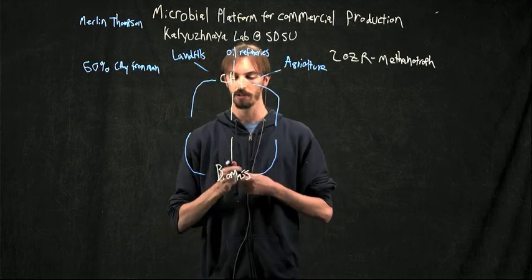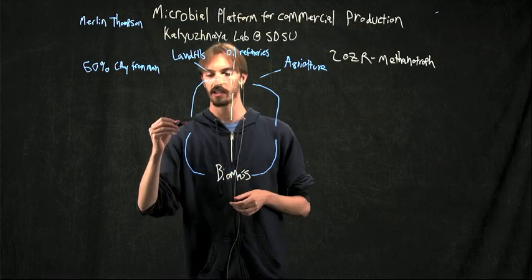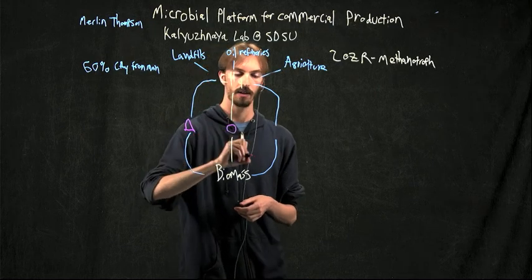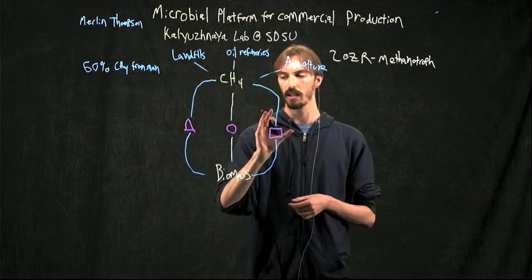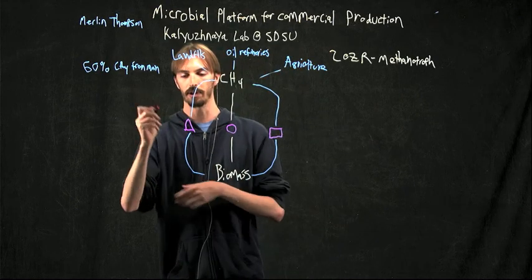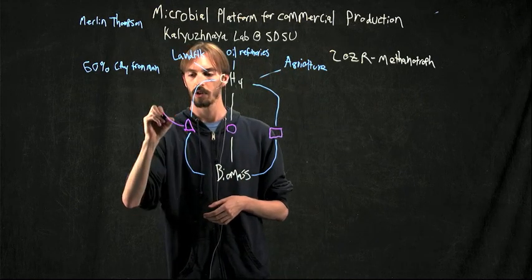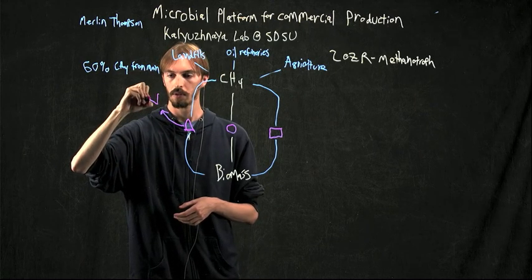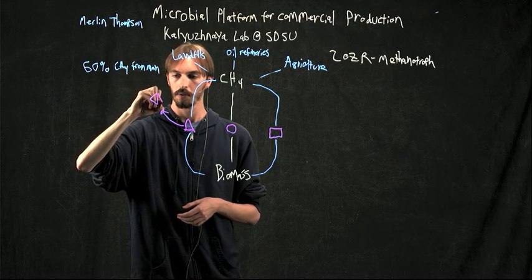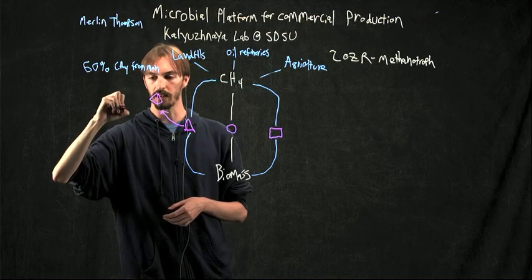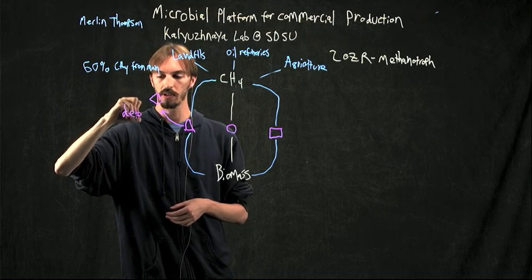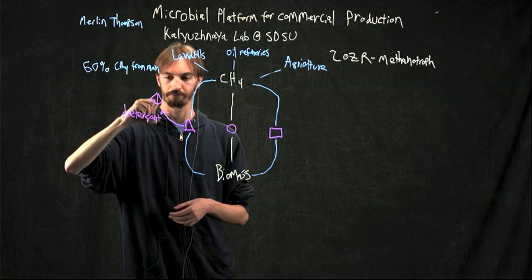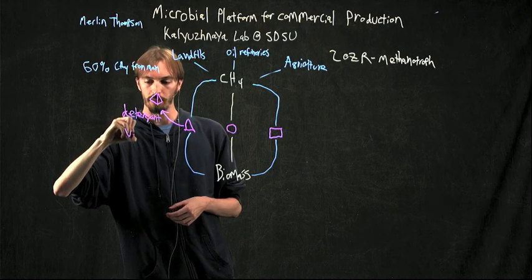And because we know what the intermediates are by doing various experiments, we have shown that we can take some of these intermediates and use them as a backbone to produce more complex chemicals such as lipase, which is used in many industrial applications, especially detergents, and vitamins.